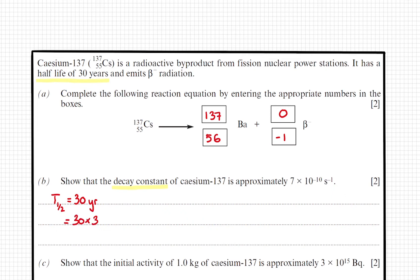30 times 365 days, 24 hours, 60 minutes, and 60 seconds. That gives us a half-life of 9.5 times 10 to the power of 8 seconds.